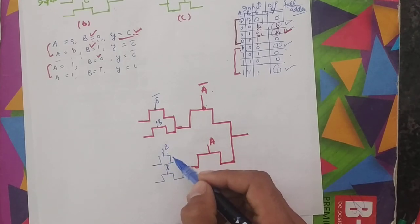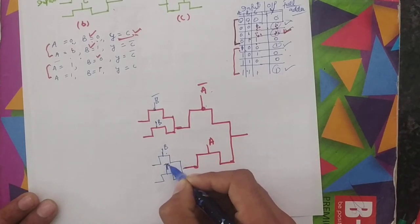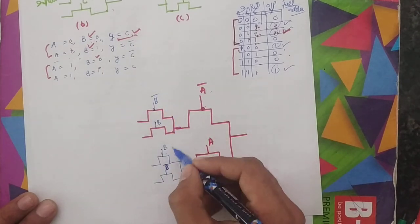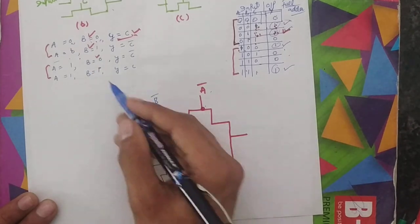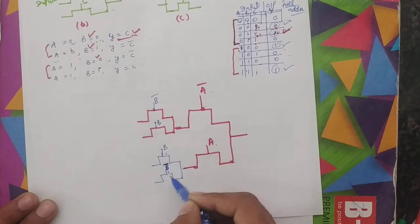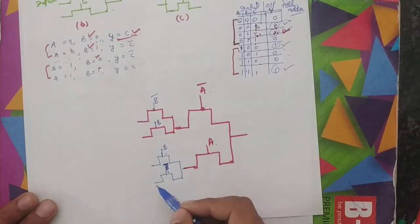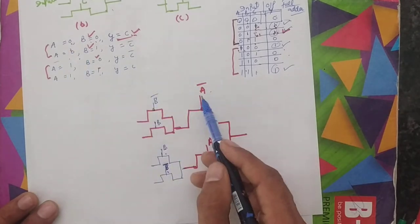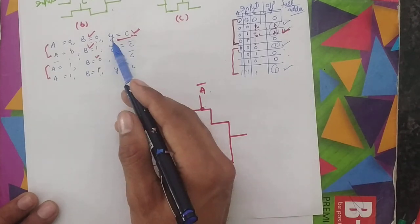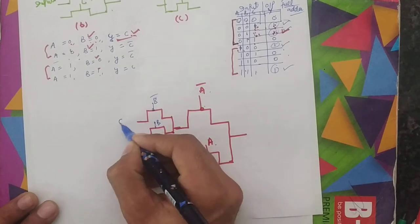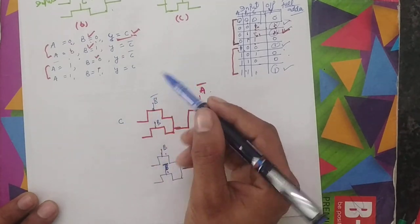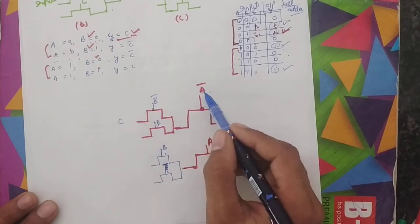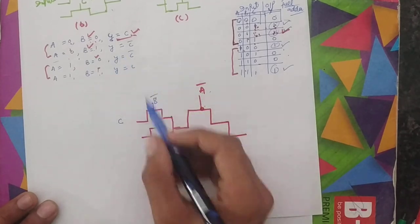So for B: when B equals 0, A equals 1, B equals 0, we use B complement; and when B equals 1 we use B. Now what is the value of C? When A equals 0 and B equals 0, C equals 0, so Y equals C — simple. When A equals 0 and B equals 1, Y equals C complement. After that, when A equals 1 and B equals 1, Y equals C.